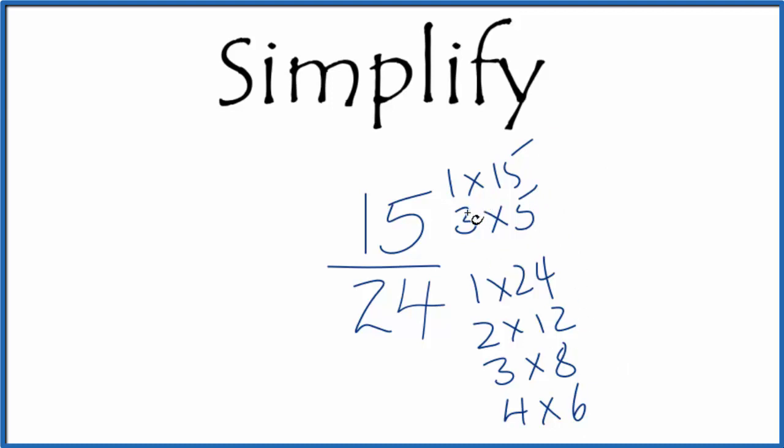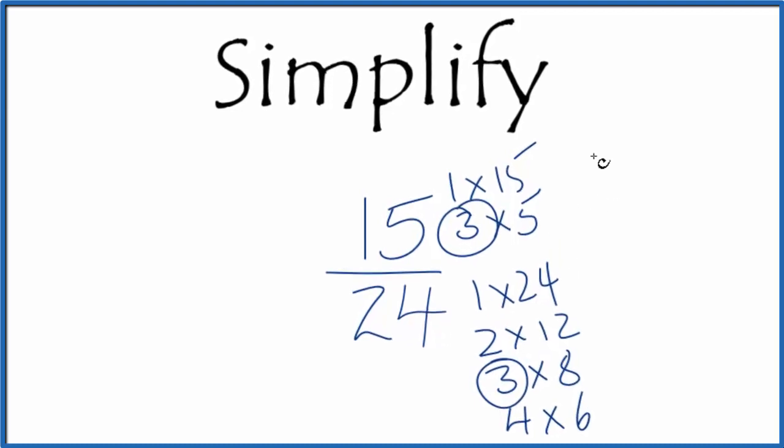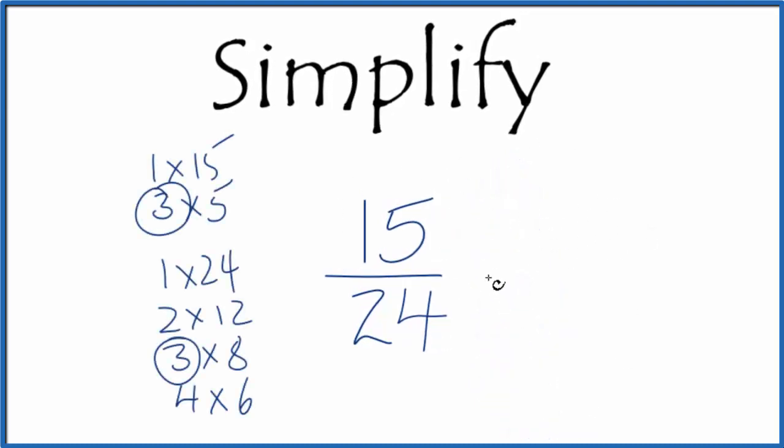When we look for a multiple here that's the same in the numerator and the denominator, the largest one is going to be 3. So we'll divide 15 and 24 by 3. 15 divided by 3 gives us 5.